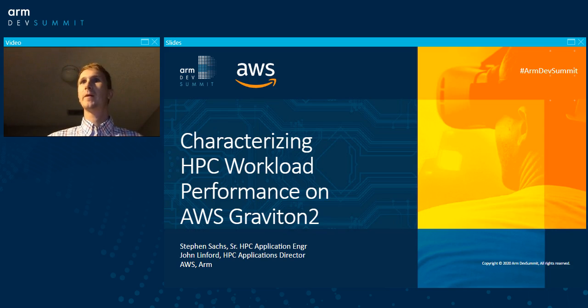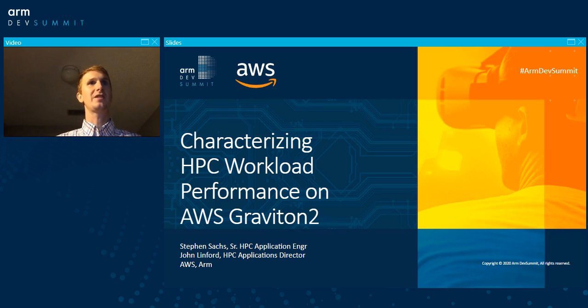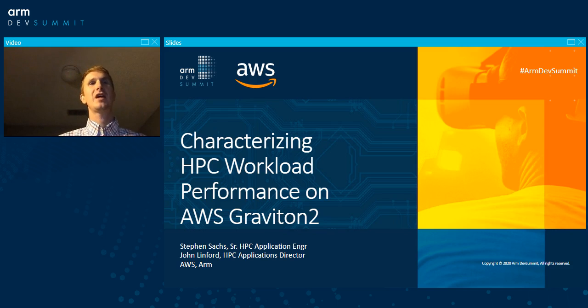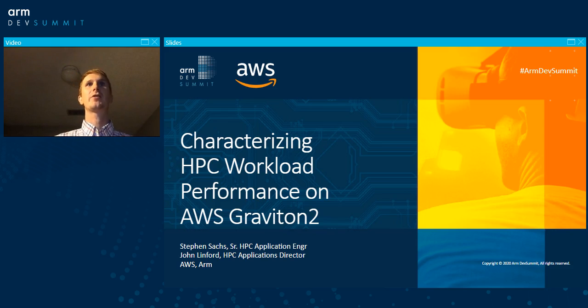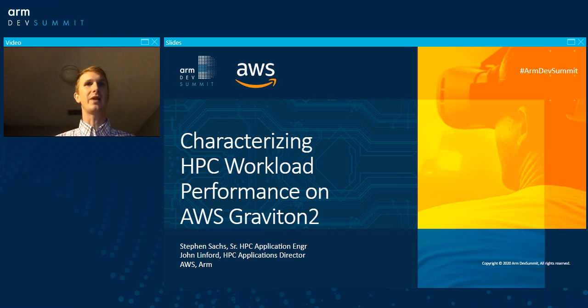Hello, everyone. My name is John Linford, I work for ARM, and I'm joined here by Steven Sachs, who works for AWS. Today we're going to talk about how you can characterize HPC workload performance on the AWS Graviton2 platform.